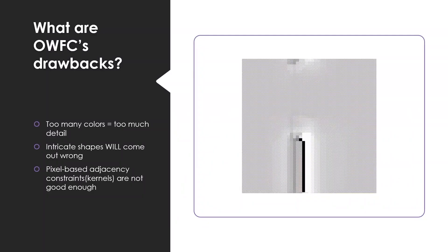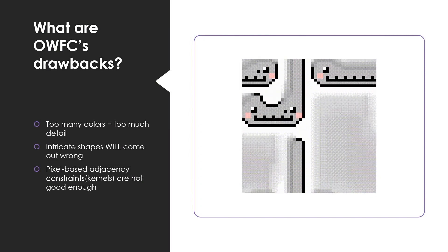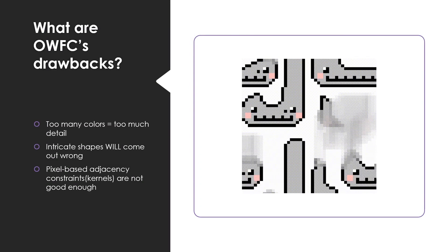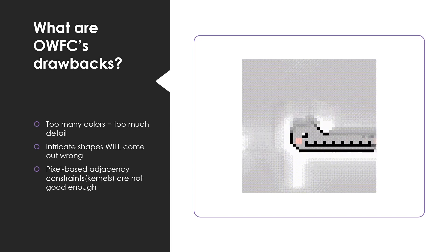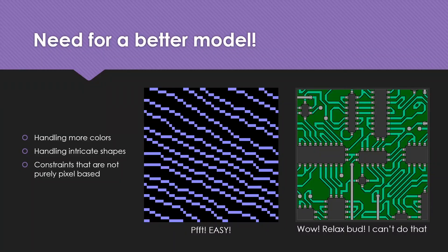The drawbacks of overlapping wave function collapse are that whenever there is too much detail — such as too many colors — intricate shapes will almost always come out wrong. Pixel-based adjacency constraints or kernels are simply not good enough. We require a better model, one that can handle more colors, more intricate shapes, and constraints that are not purely pixel-based.